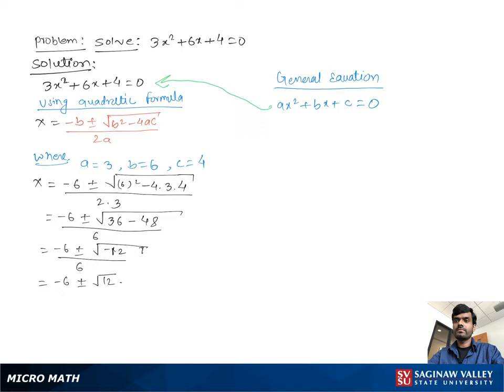So we can write negative 6 plus minus square root 12 times square root negative 1 over 6. Then we get negative 6 plus minus square root 12 which is a factor of 2 times square root 3 times i.